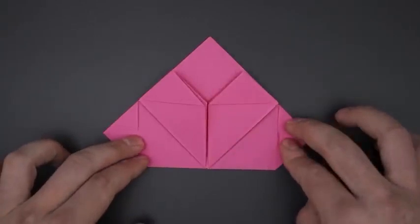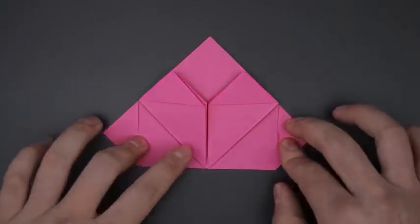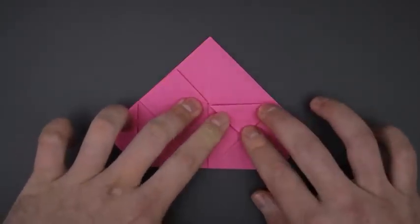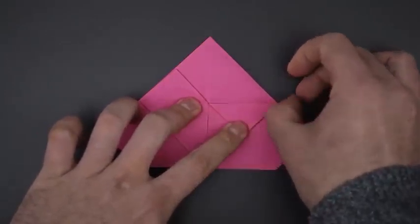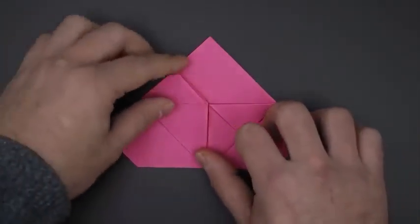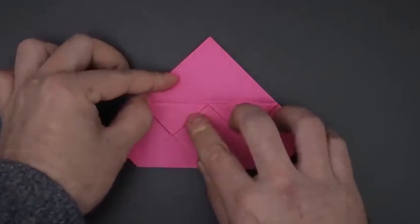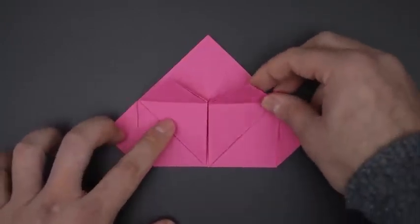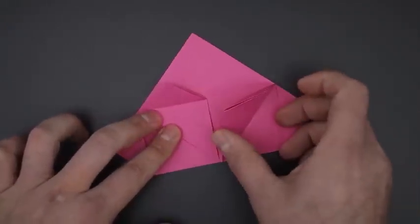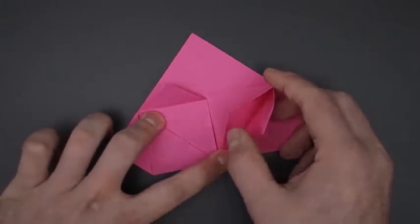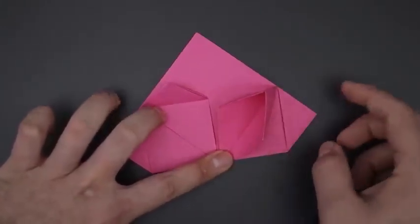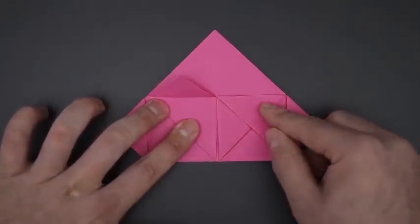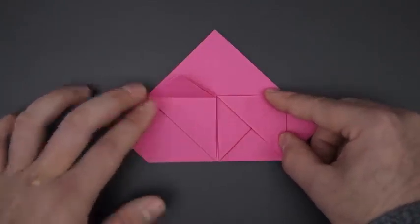Next, we're going to bring down those triangles that are on top. Unfold. Now using the marks we just made, let's open one of the flaps and flatten, creating something like this. Now repeat on the other side.